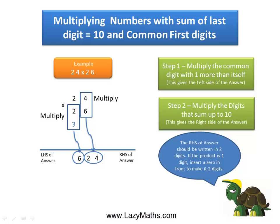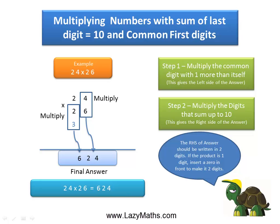We simply combine the two parts to get the final answer. So 24 times 26 equals 624. And that's it, thank you.